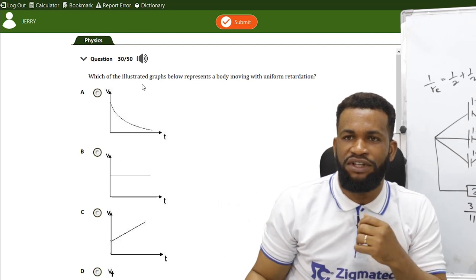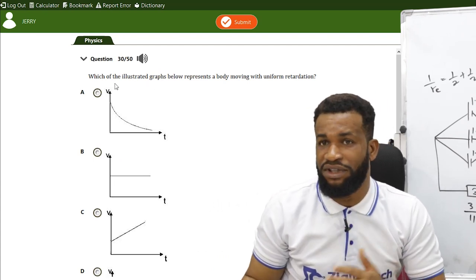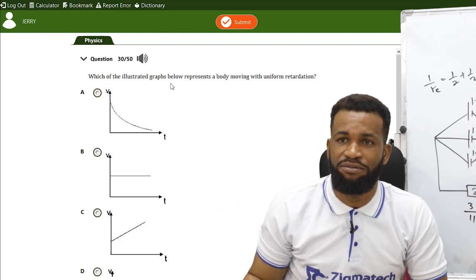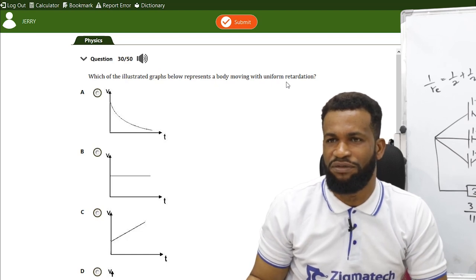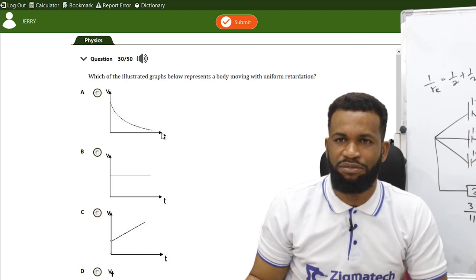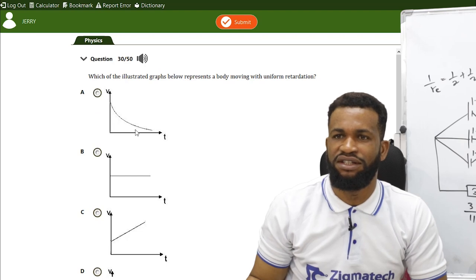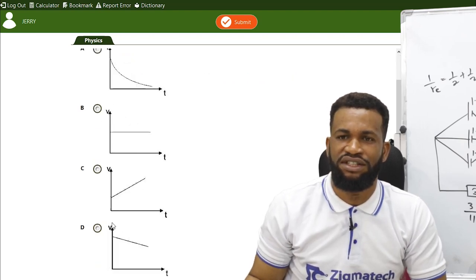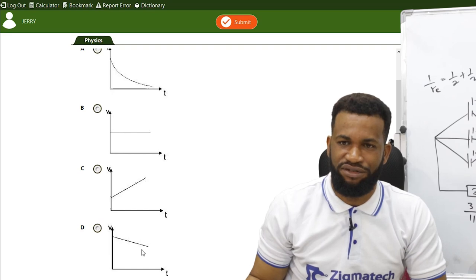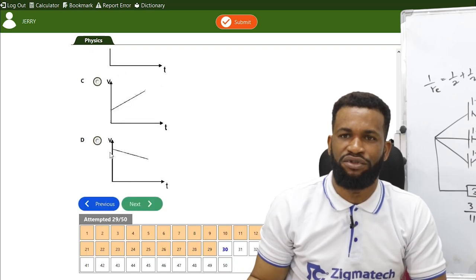Which graph represents a body moving with uniform retardation? A line showing velocity decreasing uniformly over time represents uniform retardation. Option D is correct.